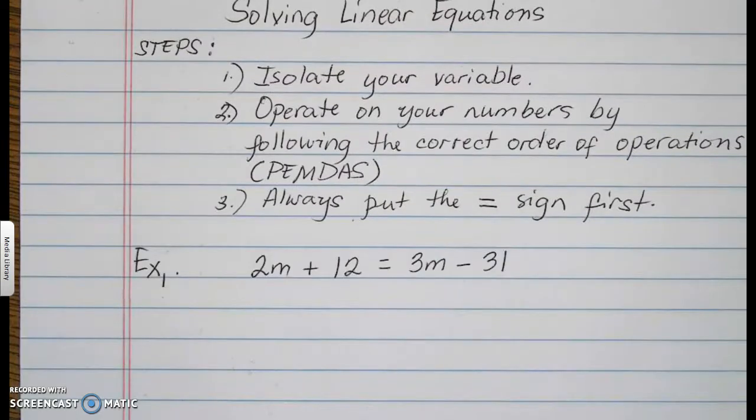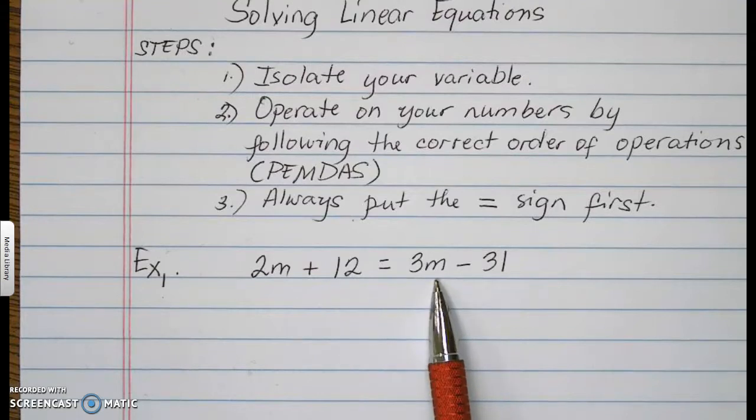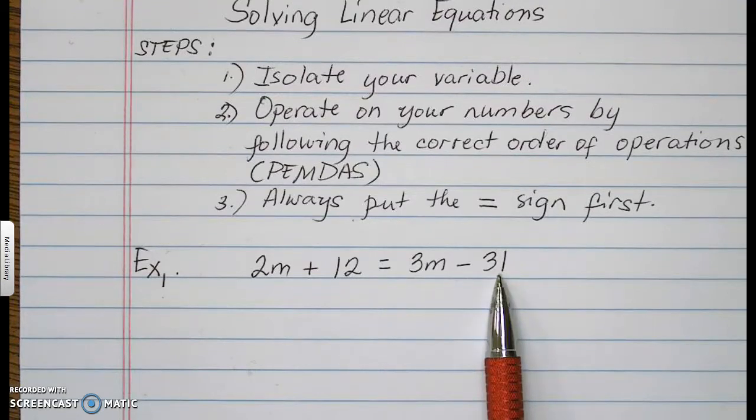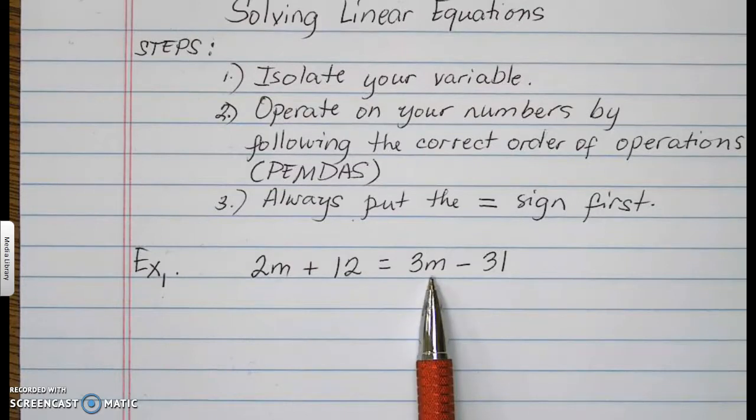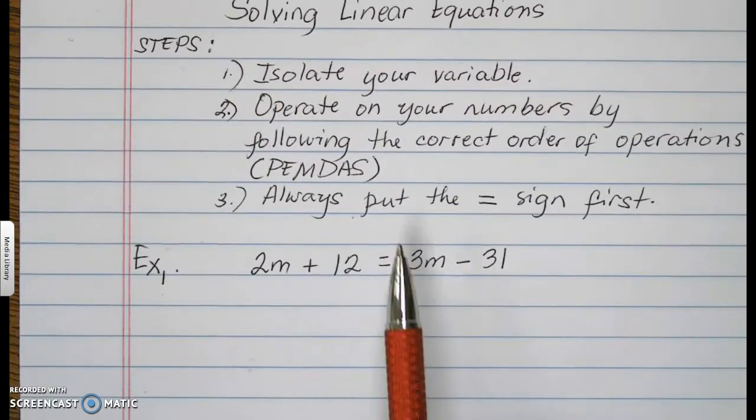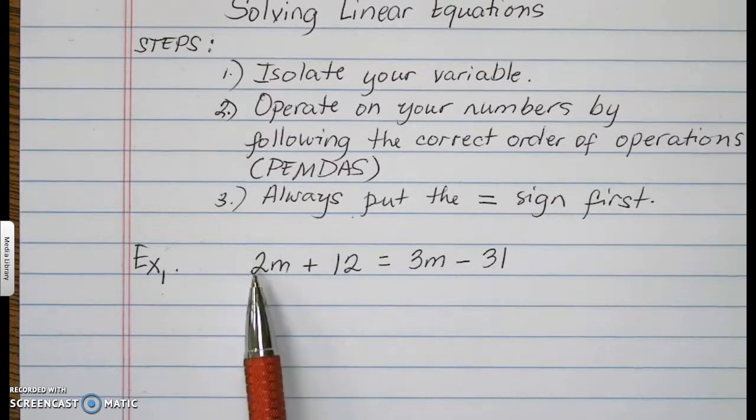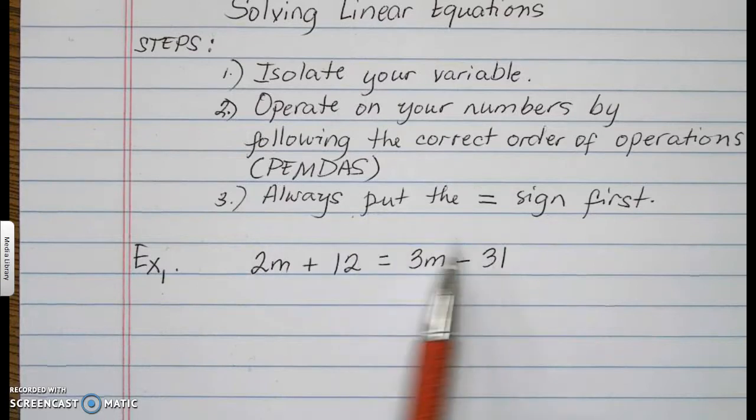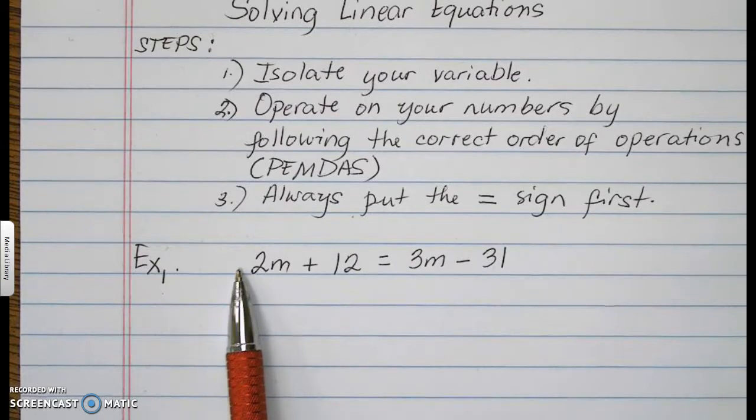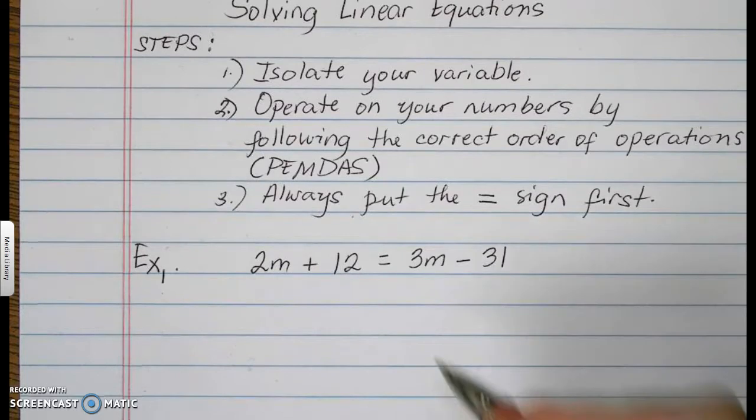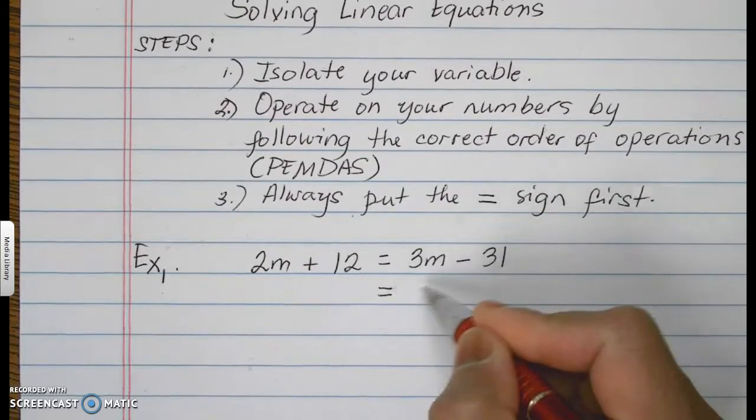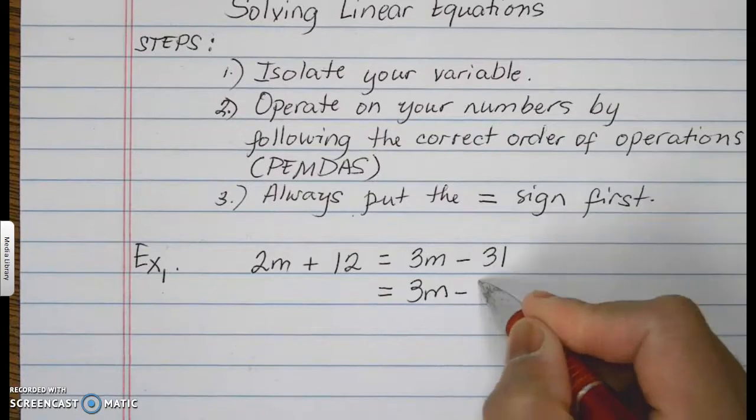Let us do example number one. 2M plus 12 equals 3M minus 31. These M's have to stay on one side. Whichever side you prefer does not matter. We will all get the same answer. However, as a strategy, I'm looking at this as a big value for M and this is a smaller value. You know that when I move this to the other side, the sign will change to the opposite sign. In this case, it's going to be minus. Therefore, I'm going to choose to put my 2M on the other side.